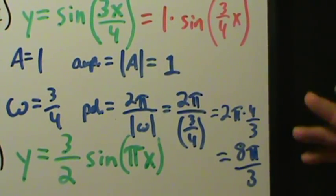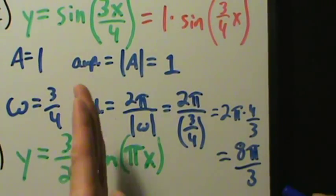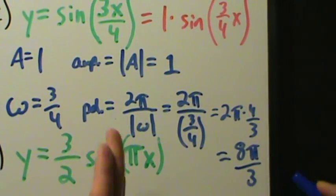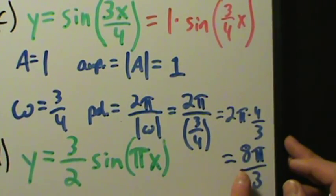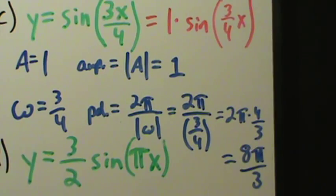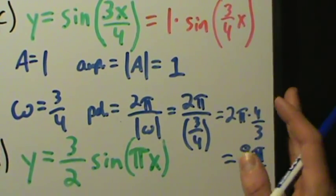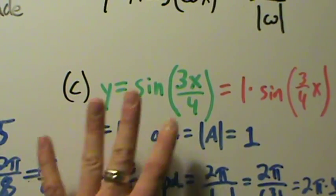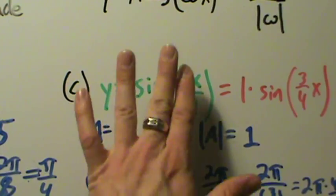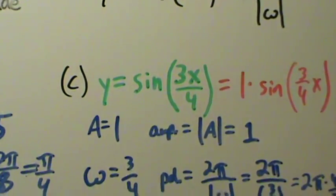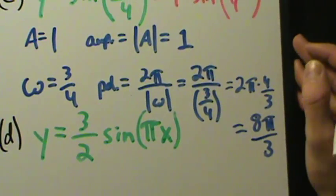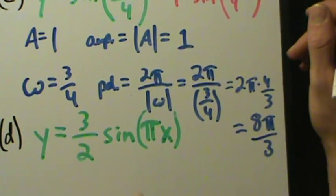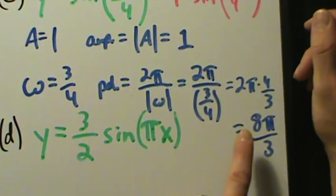8π/3 means every 8π/3 units this graph starts repeating. That's actually a kind of ugly period — not a nice number as far as multiples of pi go, which is slightly surprising because y equals sine of 3x over 4 doesn't sound like a complicated function. But it is what it is. Amplitude is 1, period is 8π/3.